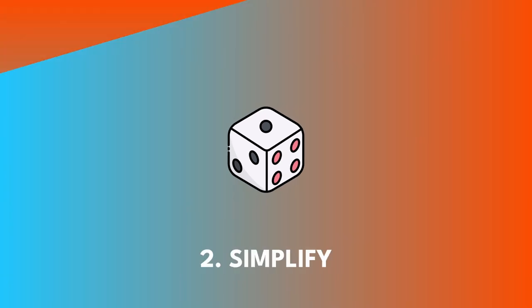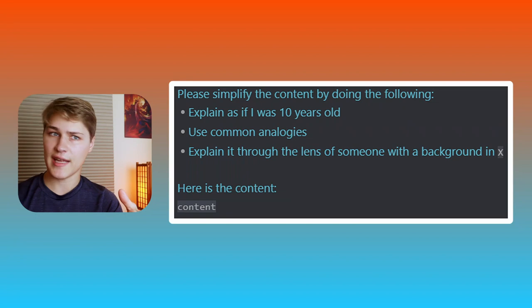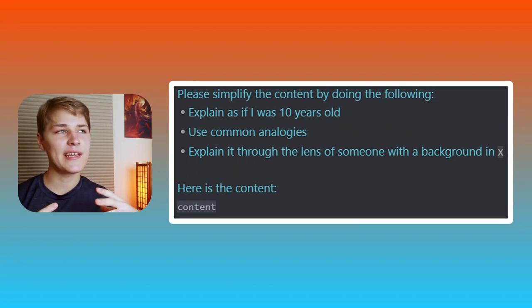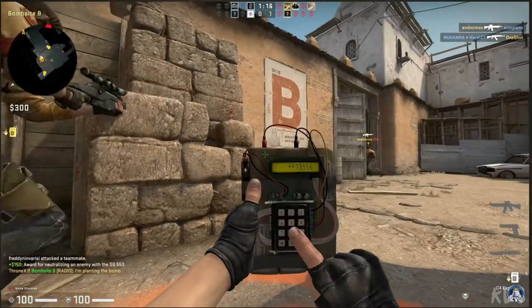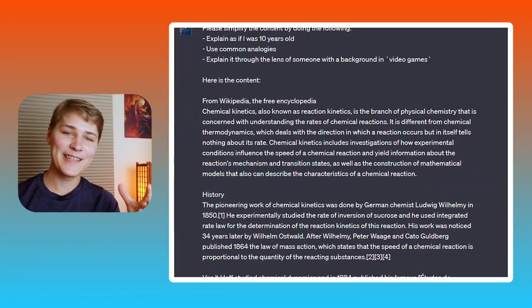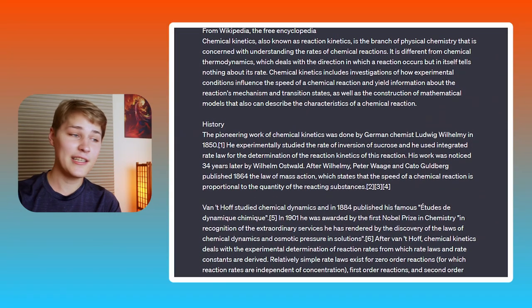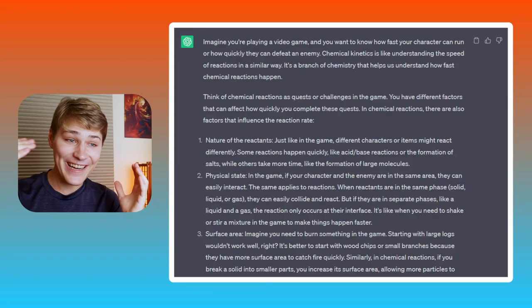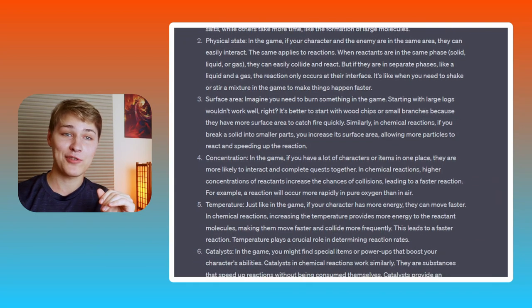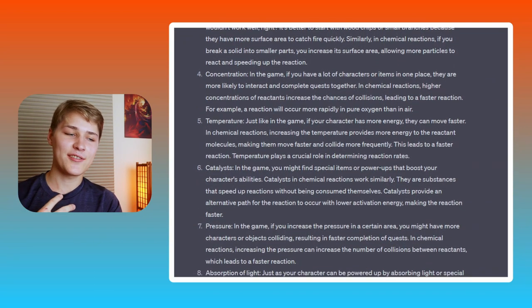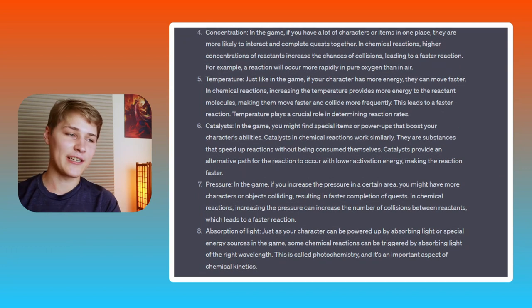Prompt 2 is Simplify. This prompt is fantastic for trying to understand something and explaining it through a background that you have. I personally have a big background in video games, so I asked ChatGPT to explain the complicated concept of non-duality in video game terms, and it gave me a pretty good explanation. You could apply this using woodworking, running, hiking — any background you want.